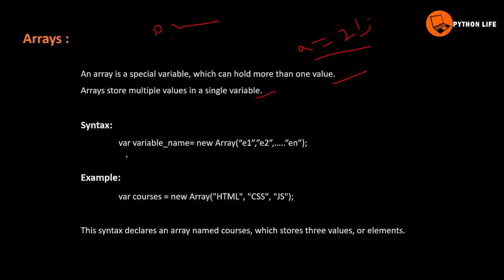The syntax to declare an array is: first the var keyword, then the variable name, then the new keyword, then the Array keyword, then the elements: e1, e2, e3, up to n. So these are all the elements.